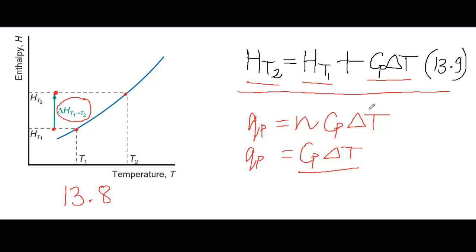But equation 13.9 assumes it is a straight line with gradient CP, and that CP doesn't change with temperature.